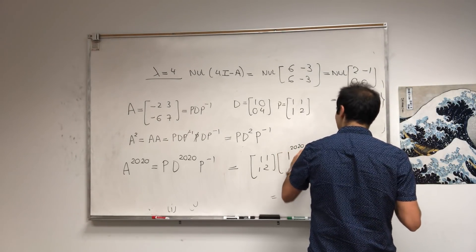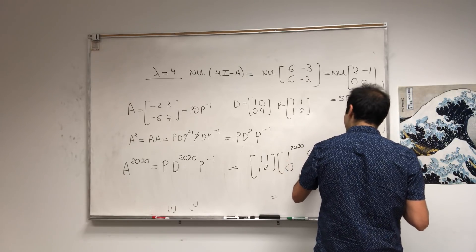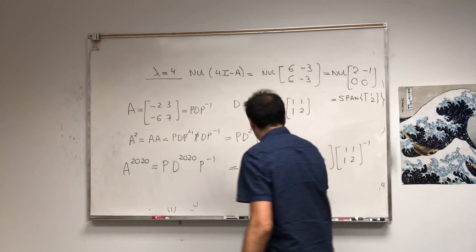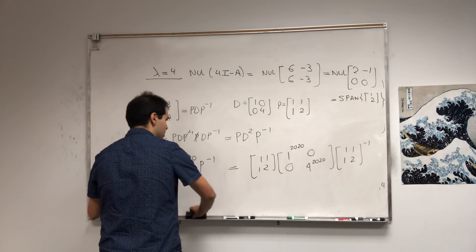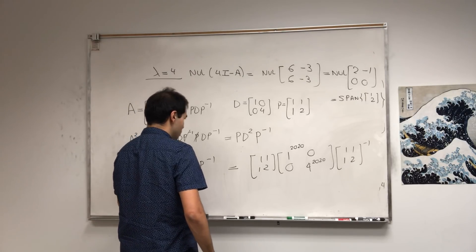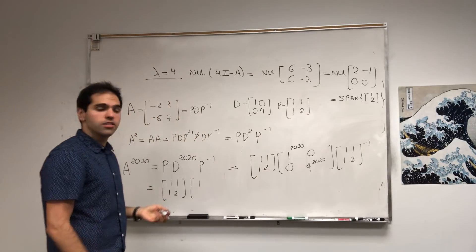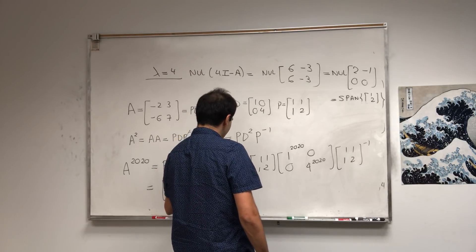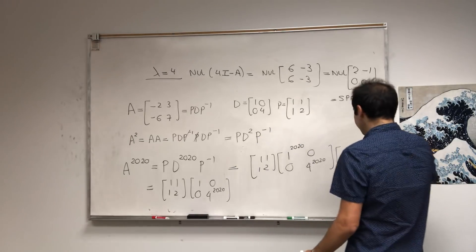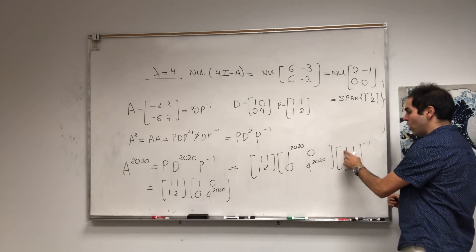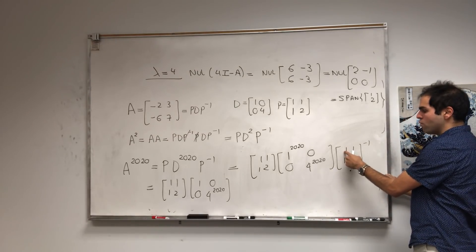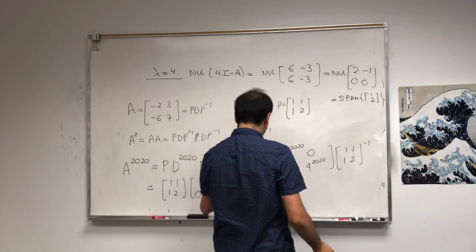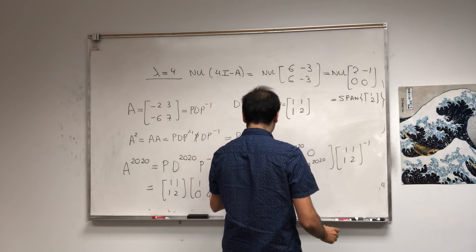You just raise the diagonal entries to the 2020th power. So we get [1^2020, 0; 0, 4^2020], then [1, 1; 1, 2]^(-1). 1 to any power is 1, so [1, 0; 0, 4^2020]. The inverse of [A, B; C, D] is 1 over the determinant, so 1 over (2-1) = 1. You flip these two entries and put minus at those entries.